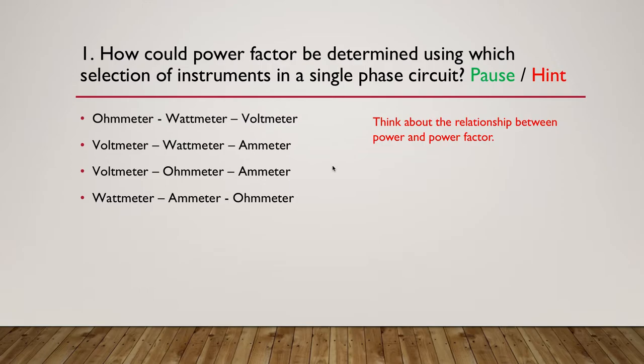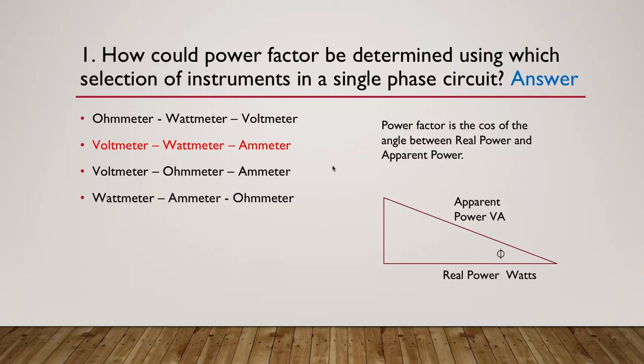The answer is you would have needed the voltmeter, wattmeter and ammeter. Power factor is the cosine of the angle between real power and apparent power. A wattmeter gives you true power, and with the ammeter and voltmeter you multiply the two readings together to give apparent power. Then you can use trigonometry to solve for the cosine of the angle.